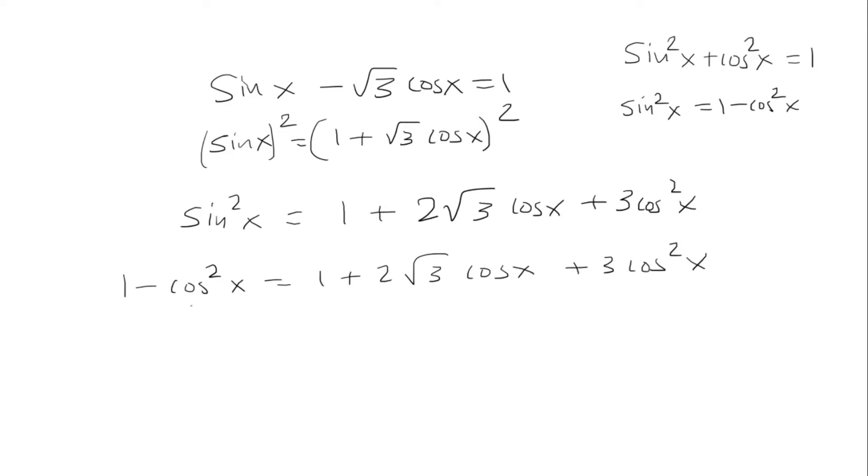Next step, I'm going to move everything to the right. So that means adding cosine squared and subtracting 1. So if I subtract 1, these go away. So I'm going to have 4 cosine squared plus 2 root 3 cosine equal to 0. Next, I can factor out a factor of 2 and a cosine. So what's left is 2 cosine plus root 3 equal to 0.